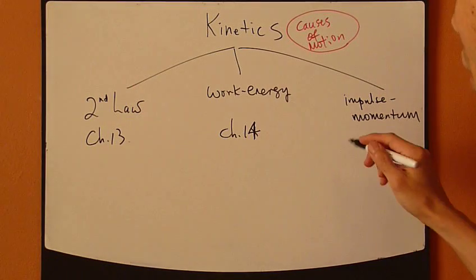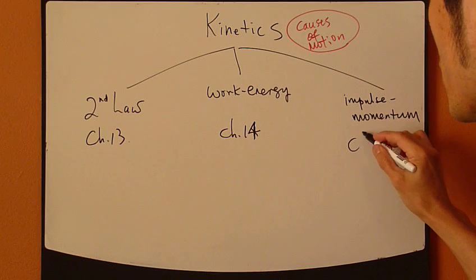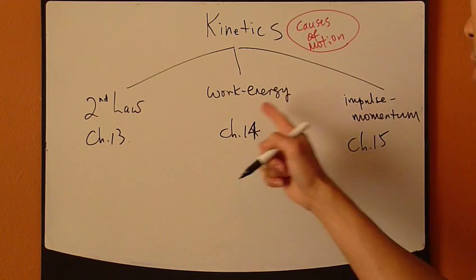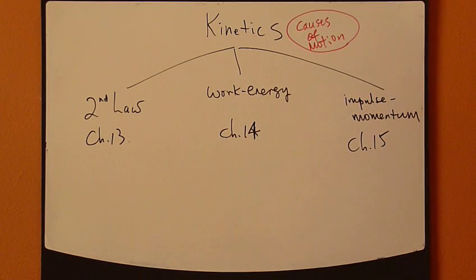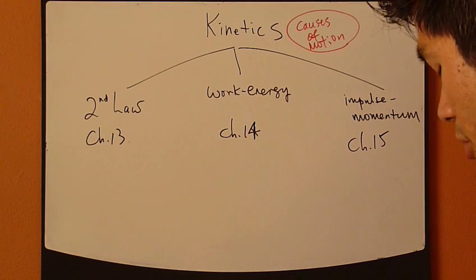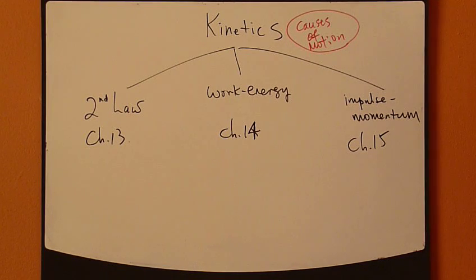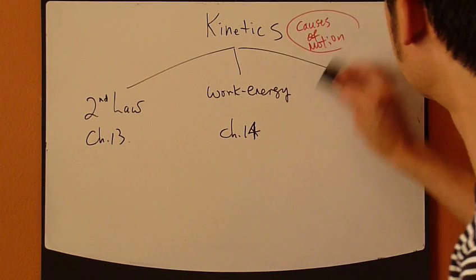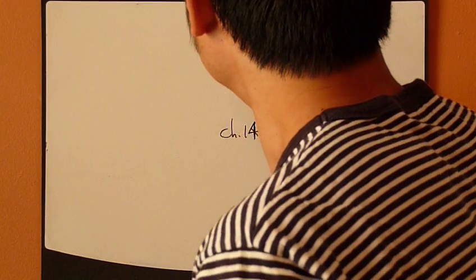It comes from Newton's Second Law, just that we do some mathematical manipulation to come up with different forms of Second Law, and it's called Work Energy for Chapter 14, and Impulse Method for Chapter 15. Okay, let's look at Chapter 13. Here's the Second Law Method.